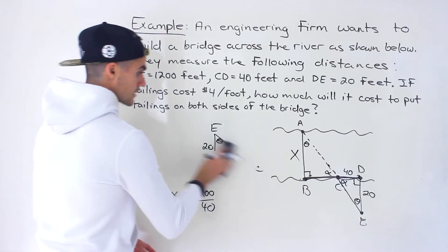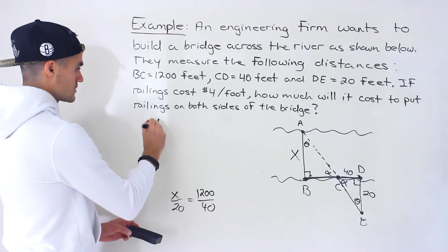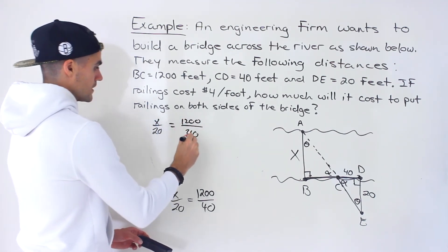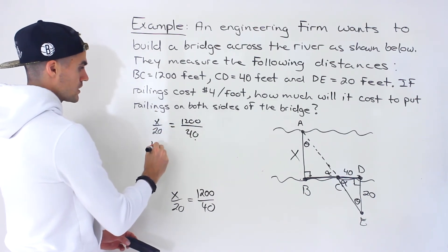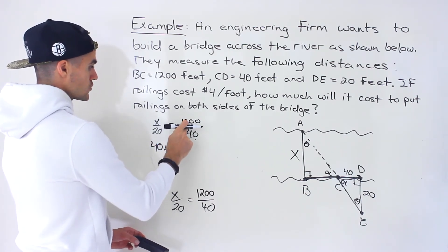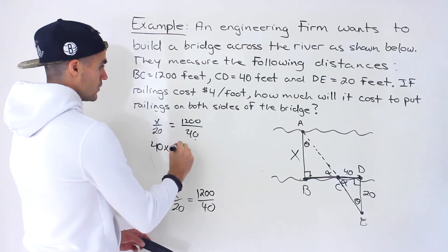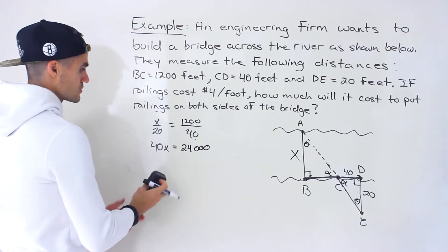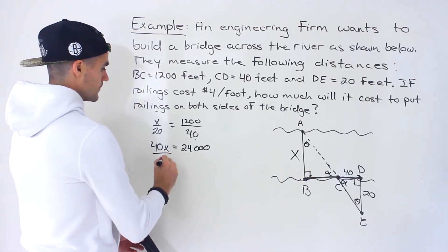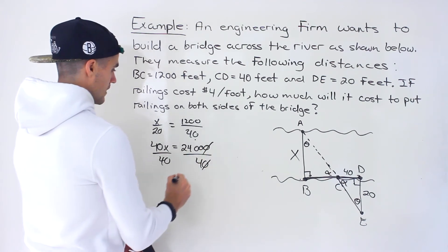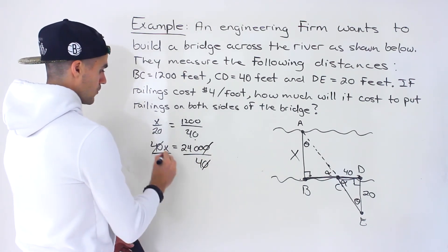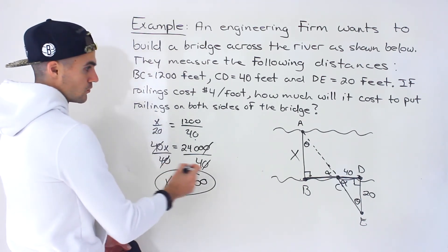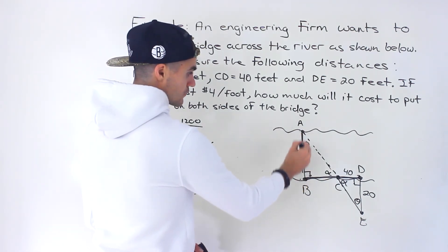I got x over 20 equals 1200 over 40. We can cross multiply: 40 times x gives us 40x, and 1200 times 20 gives us 24,000. Then we divide both sides by 40, and we end up with x equaling 600. So the bridge is 600 feet.